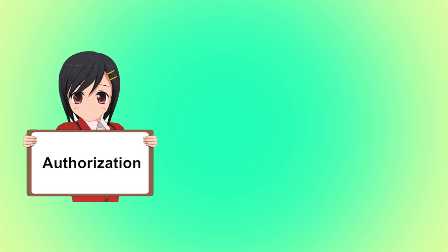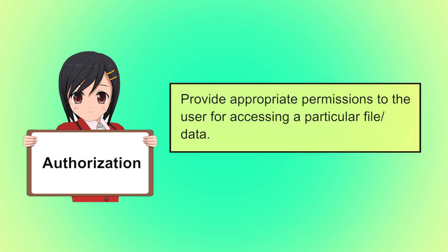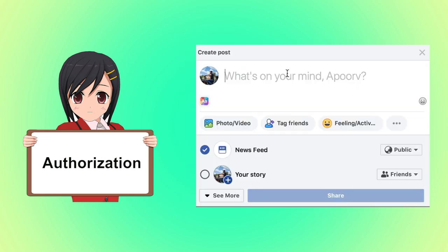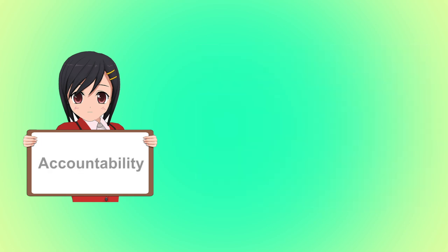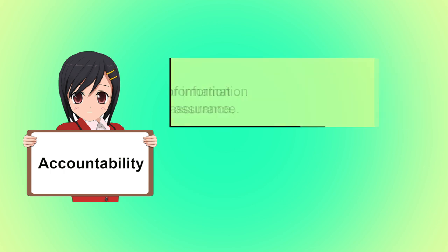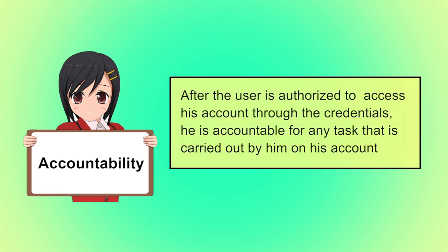Second is authorization — it is the process of ensuring that an employee has enough access rights to particular information so that he can perform intended actions. For example, once you enter valid credentials to your Facebook account, you are authorized to perform all that you have permission to do — like posting pictures, videos, statuses, etc. Accountability focuses on the idea that any actions taken by an entity can be traced uniquely to that entity. After the user is authorized to access his account, he is accountable for any task carried out by him on his account.